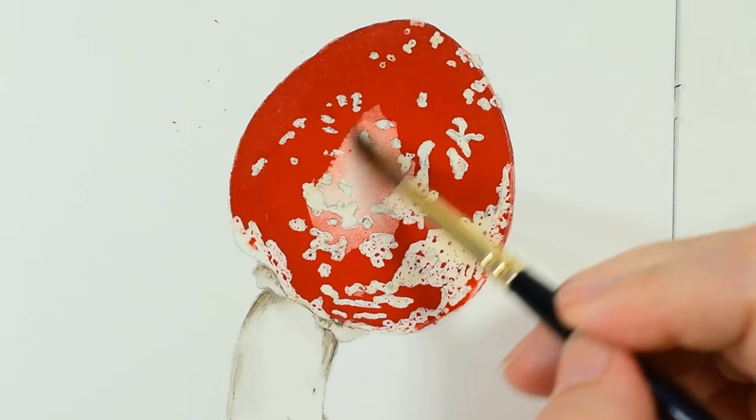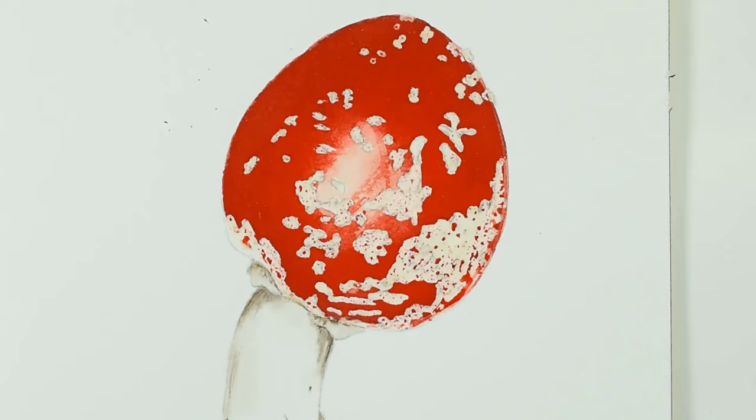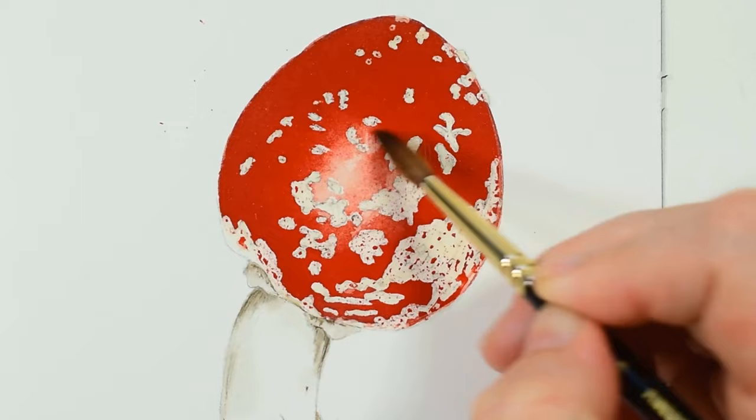So here I just use my clean damp brush to blend the edges of the red into the lighter area, creating a smooth transition. And again, once that layer is dry, I come back in and darken up the edge again.